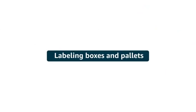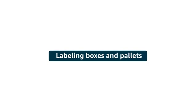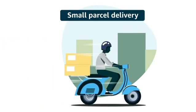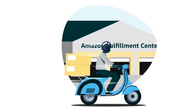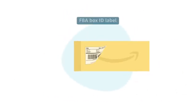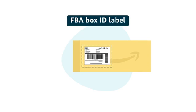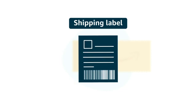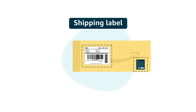After confirming your shipping, you are ready to label your boxes and pallets. For the small parcel delivery shipping mode, each box that you send to Amazon's fulfillment centers requires an FBA box ID label identifying the contents of the box. If you're using an Amazon-partnered carrier, a shipping label will be generated for each box in addition to the FBA box ID label. Make sure that the correct label is applied to the correct box.